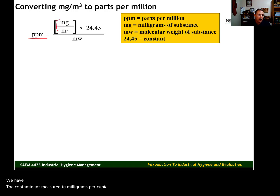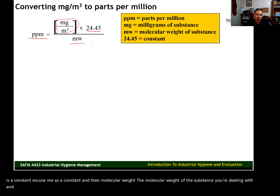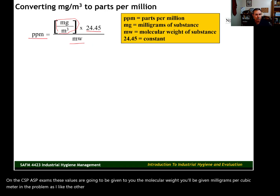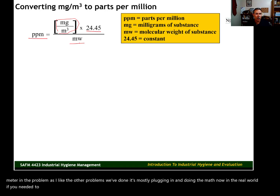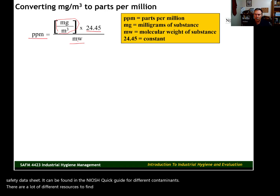Breaking down the formula: we're calculating parts per million concentration. The contaminant measured in milligrams per cubic meter is one input. The value 24.45 is a constant, and then we have the molecular weight of the substance — the weight of the substance relative to the weight of water. On the CSP and ASP exams, these values will be given to you. In the real world, molecular weight can be found on the safety data sheet or in the NIOSH quick guide for different contaminants.